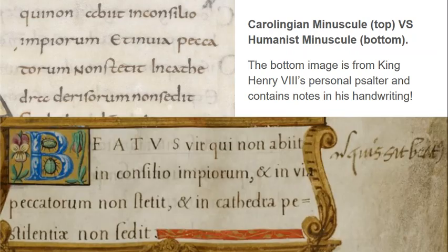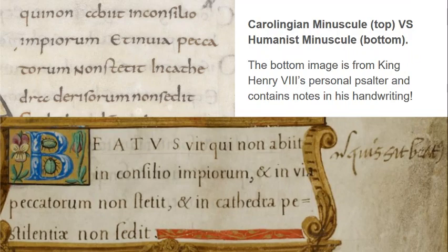Because the humanists found Roman texts written in Carolingian script — which was from a few centuries earlier — they assumed Carolingian script was how the Romans actually wrote. So humanist minuscule is basically a medieval forgery: an attempt to fake the Caroline minuscule script, thinking it was the Roman script. Here is Psalm 1 in both a Carolingian minuscule script (top) and a humanist minuscule script (bottom): 'Qui non abiit in concilio impiorum et in via peccatorum non stetit, in cathedra derisorum non sedit.'